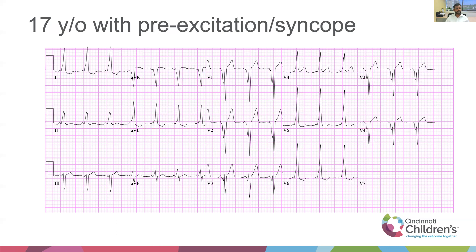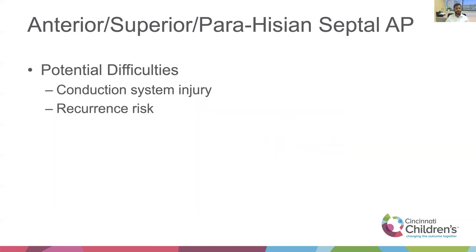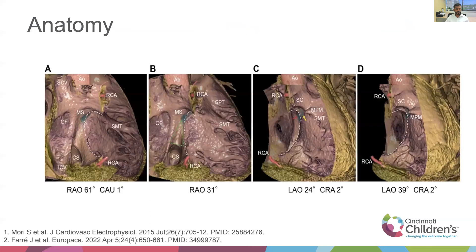Now a 17-year-old with pre-excitation and syncope — positive in 2, 3, AVF, negative in aVL — which takes you to an anterior superior parahissian septal accessory pathway, with potential difficulties of conduction system injury and recurrence risk. Going back to the anatomy, both the anteroseptal and the parahissian location are two different terms but in general mean the same, as shown by Champi-Mori et al., where they show the triangle of Koch and in green the membranous septum, which signifies the area where the bundle of His penetrates.